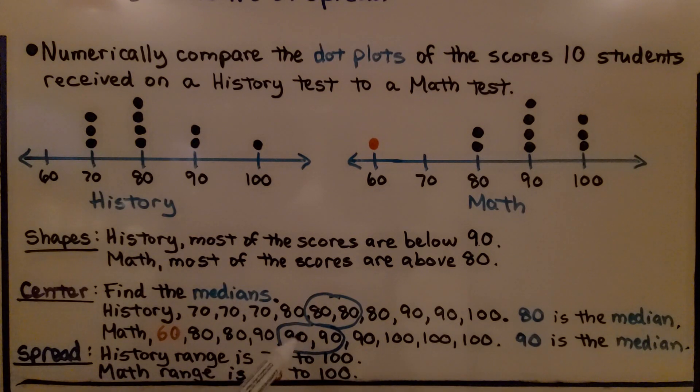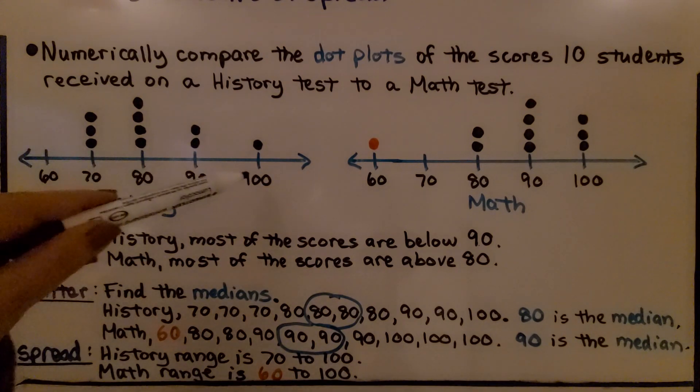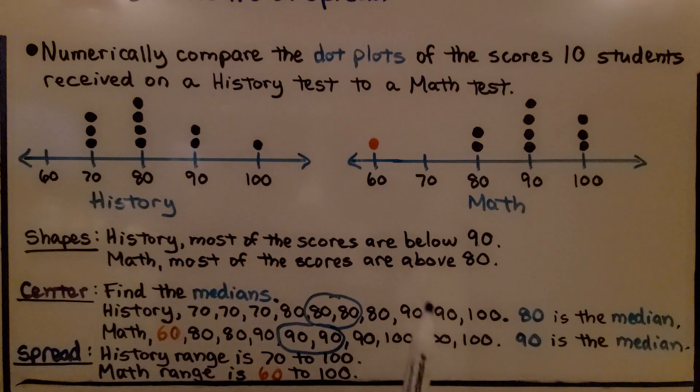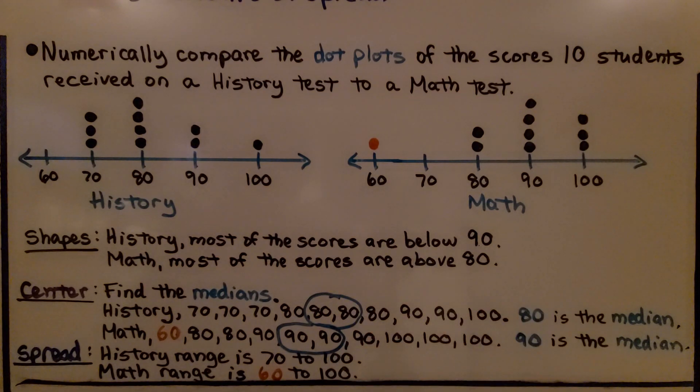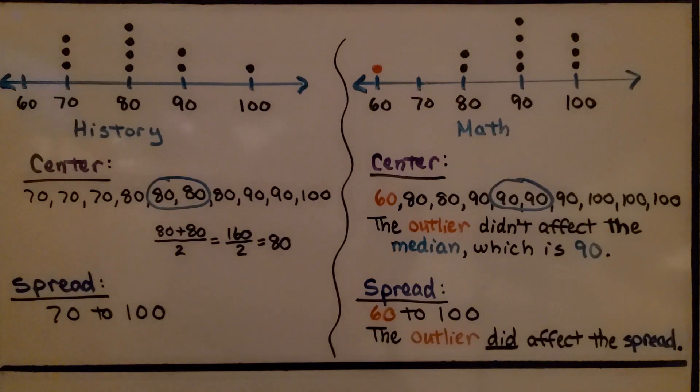For the spread, history has a range from 70 to 100, and for math, the range is 60 to 100. We have an outlier here, don't we?